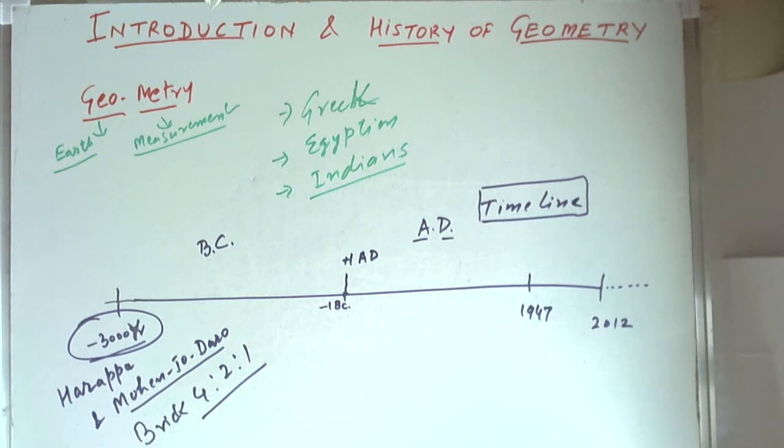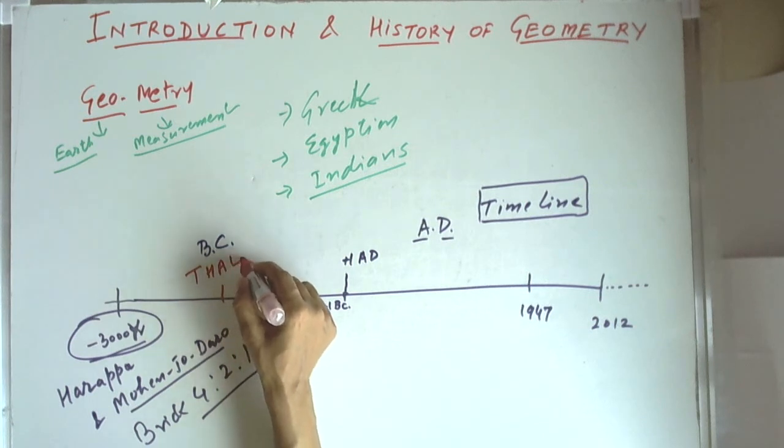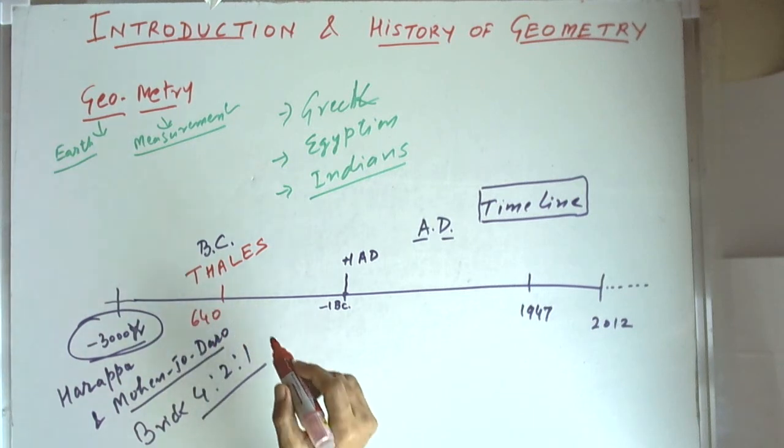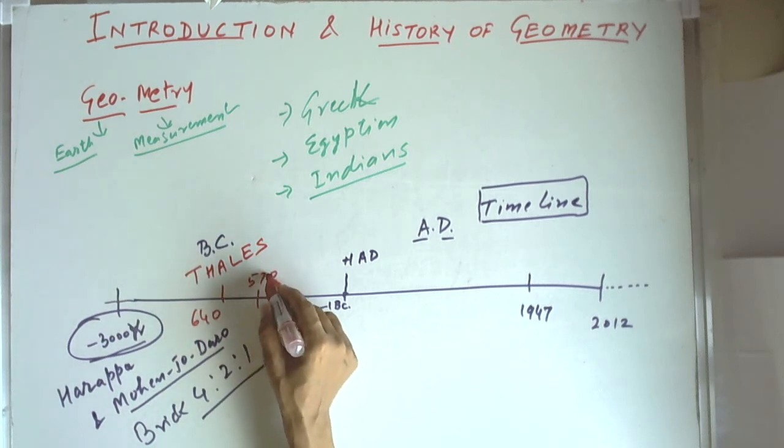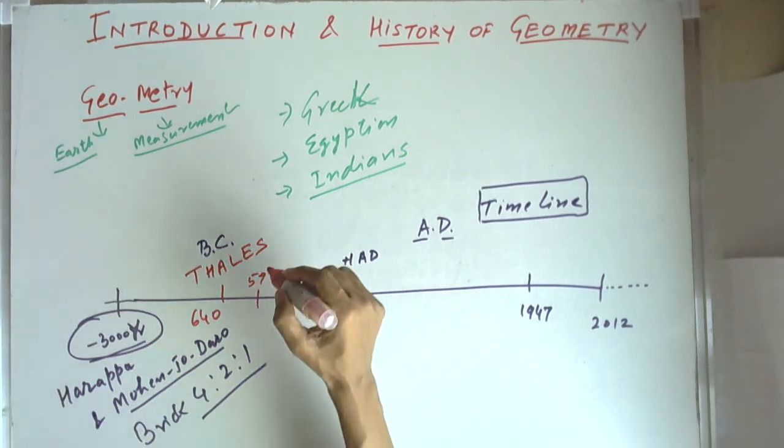This is where geometry evolved in India starting from 3000 BC and it continued. The Greeks also developed geometry. There was a mathematician with the name Thales, 640 years before Christ. Then there was another mathematician, 570 years before Christ, Pythagoras, and he gave us the important Pythagorean theorem.